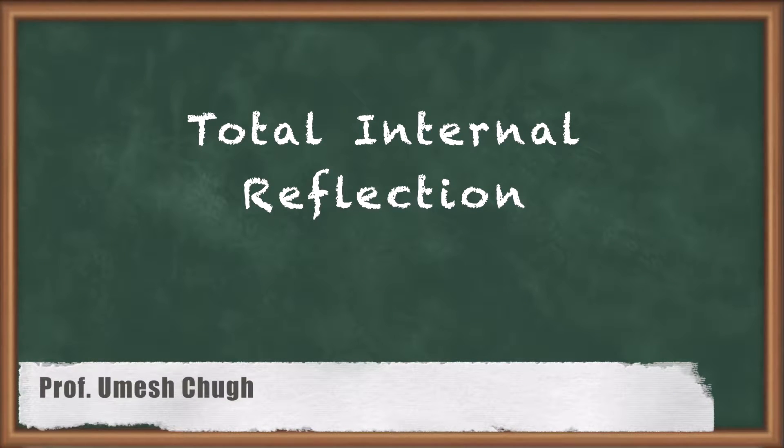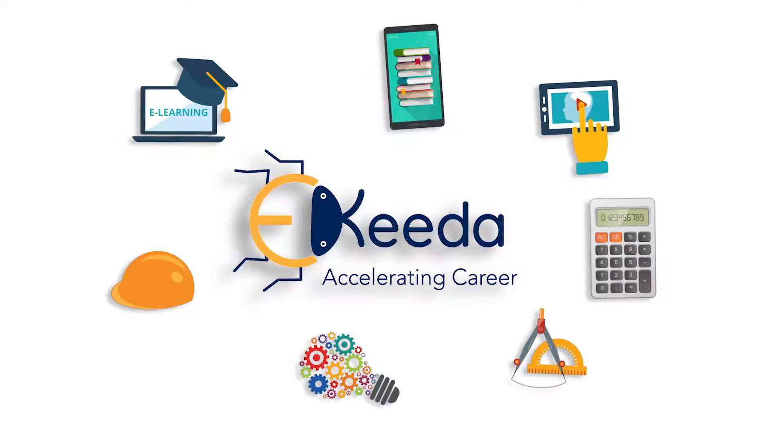Hello students. In this video I will discuss about critical angle and total internal reflection. Critical angle is defined as the angle of incidence at which the angle of refraction is 90 degrees. We know that when light moves from a denser to a rarer medium, it bends away from the normal.